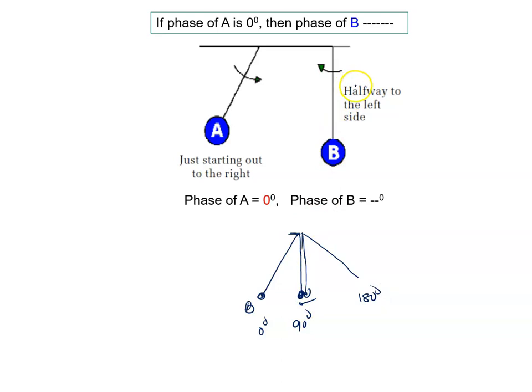Idhar jane ke liye, yeh wala direction haa hoa dekho, yeh wala here hoa. So phase of B getta ho jayega 270 degree.